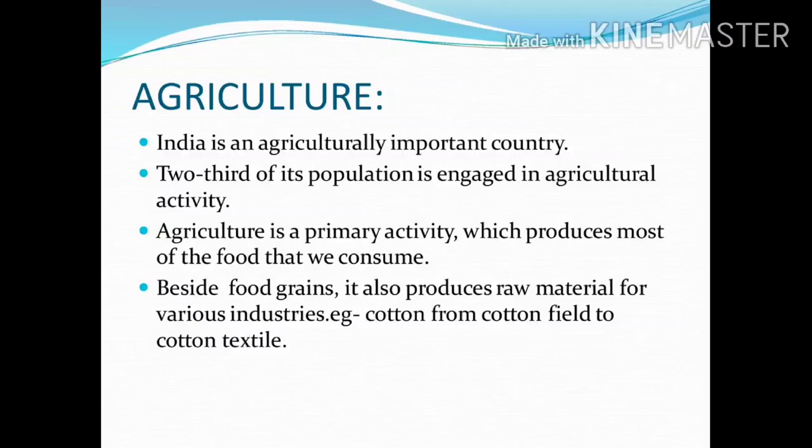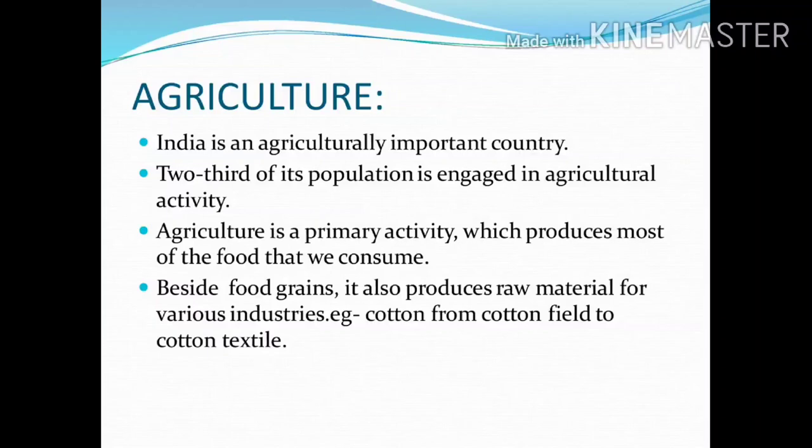India is an agriculturally important country. Two-thirds of its population is engaged in agricultural activity. Agriculture is the primary activity which produces most of the food that we consume. Besides food grain, it also produces raw material for various industries. For example, cotton from cotton field to cotton textile.